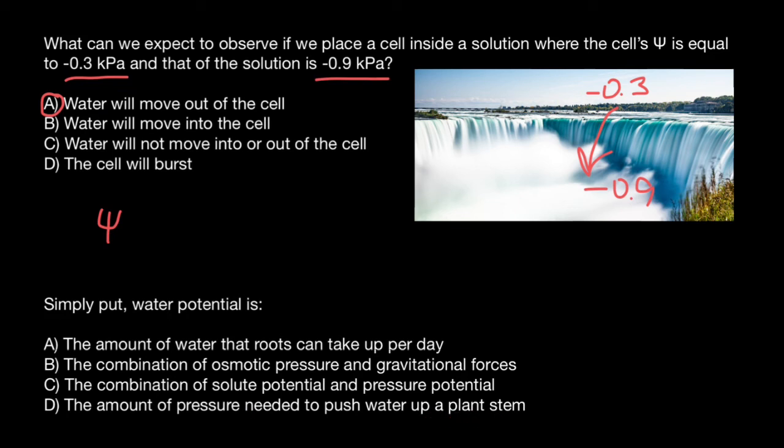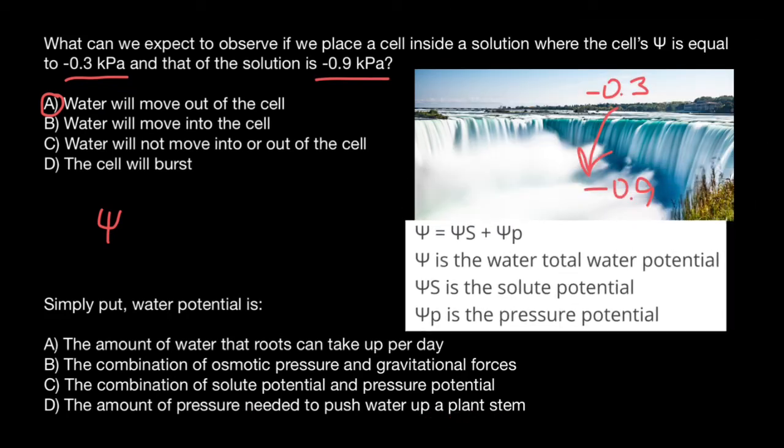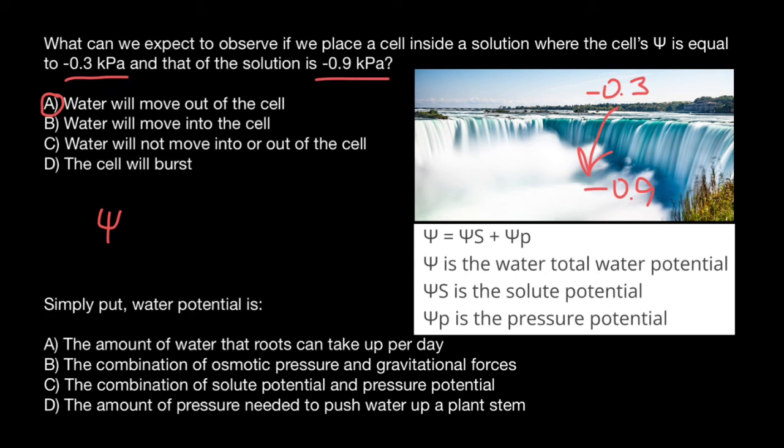Here is the formula for water potential. In this formula, Ψ stands for the total water potential (sometimes written as Ψw), Ψs stands for the solute potential, and Ψp stands for the pressure potential. As you can see, the correct answer is C: the combination of solute potential and pressure potential.